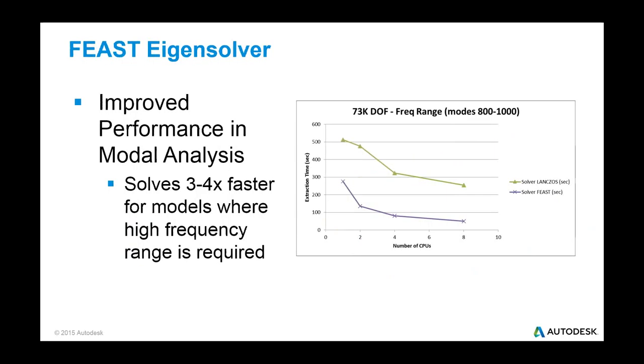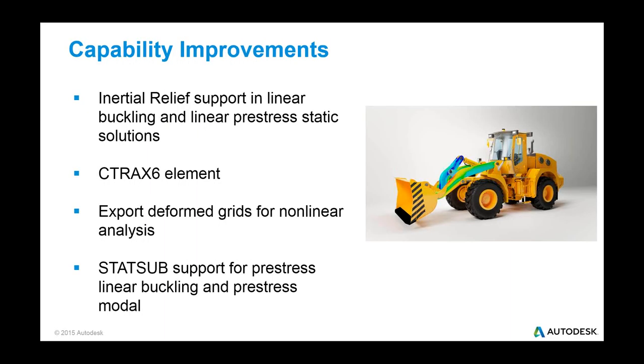The next one that we added is a feast eigensolver. And this really helps us for a certain type of problem. So when you're doing a normal modes analysis or natural frequencies, and you're looking for a frequency range that doesn't start at zero, that's higher. So let's say you wanted to go from 1,000 hertz to 2,000 hertz or 500 hertz to 1,000 hertz. This helps us solve those a lot faster. And from the testing that we've done, it's looking like it's about three to four times faster.